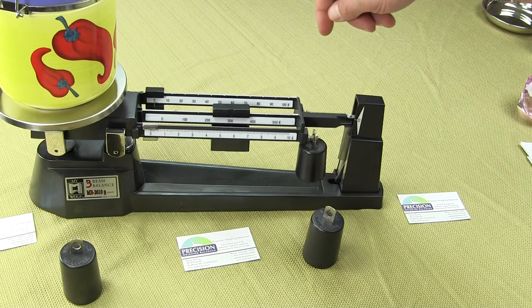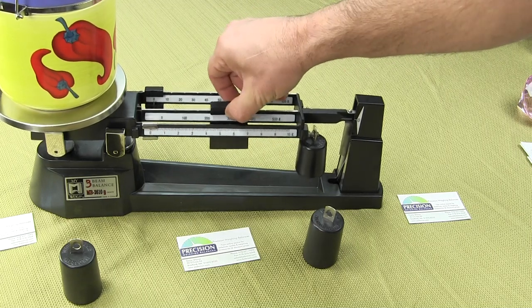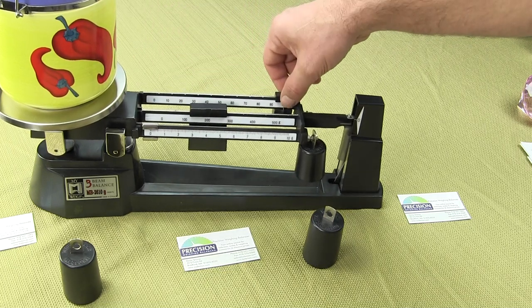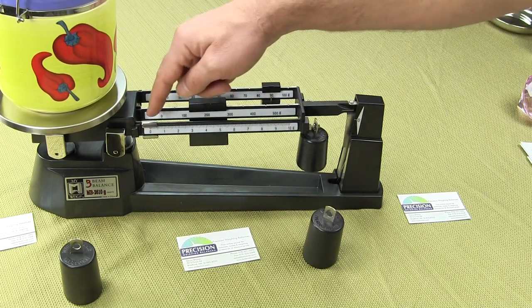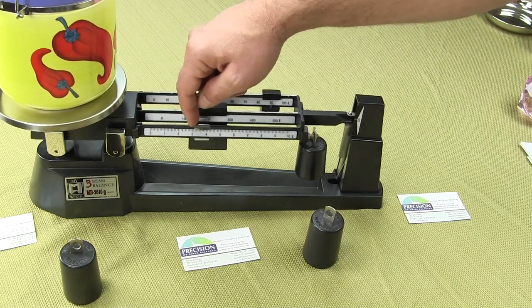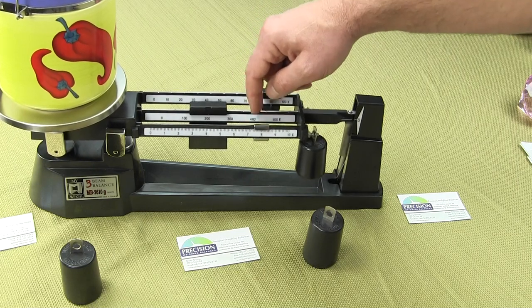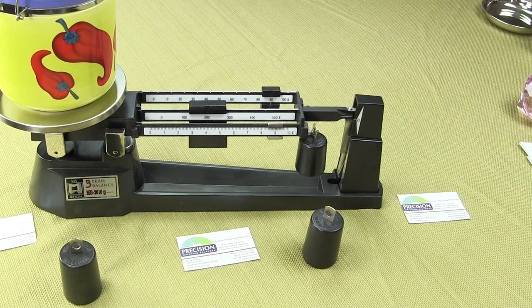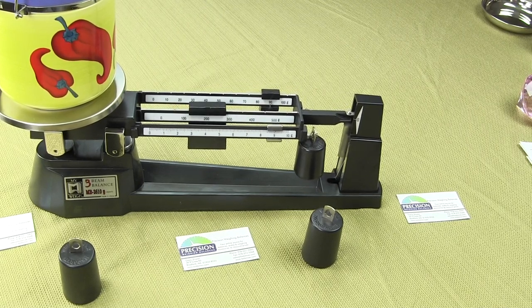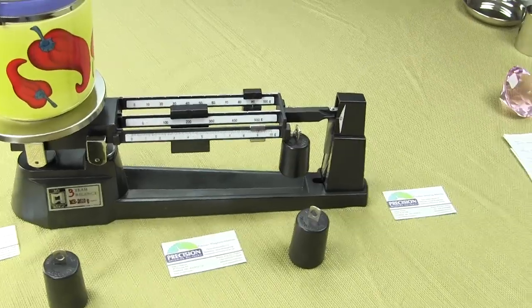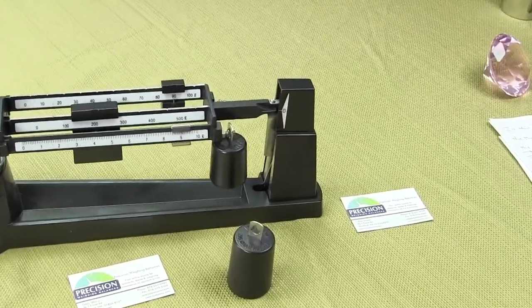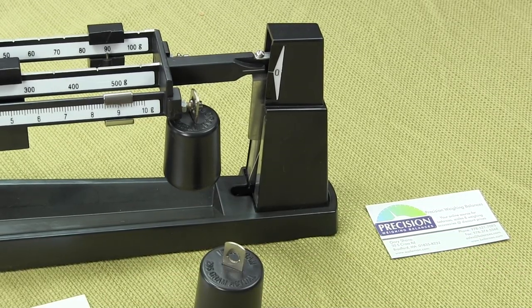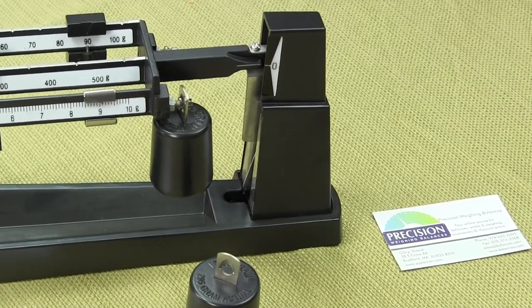You'd want to slide your largest poises across and see where the beam lifts up. It's still down, so we'd have to go back to 200, then 90. Again you slide your riders across until you can get that hashtag at the very end of the beam lined up, and it looks pretty close right there.